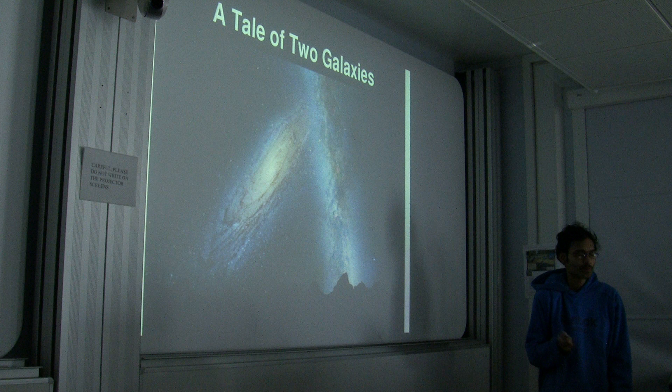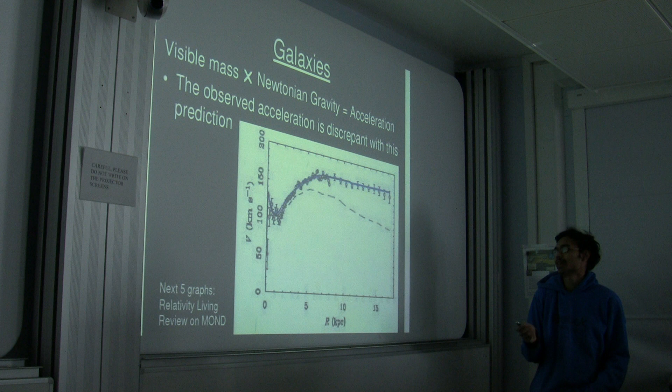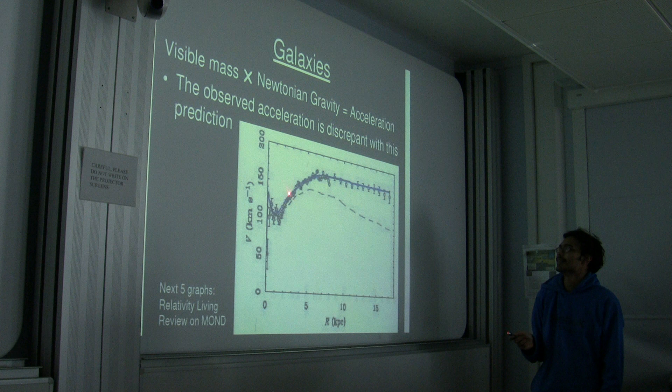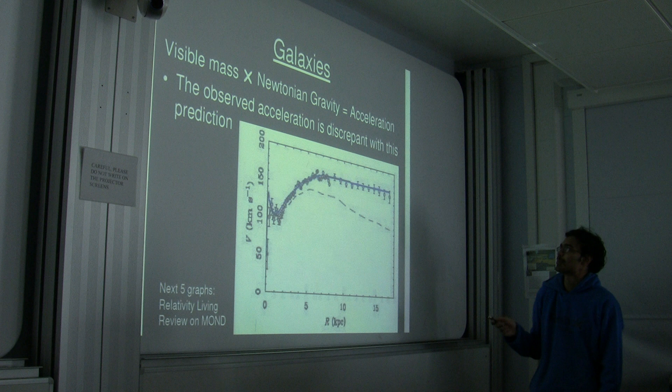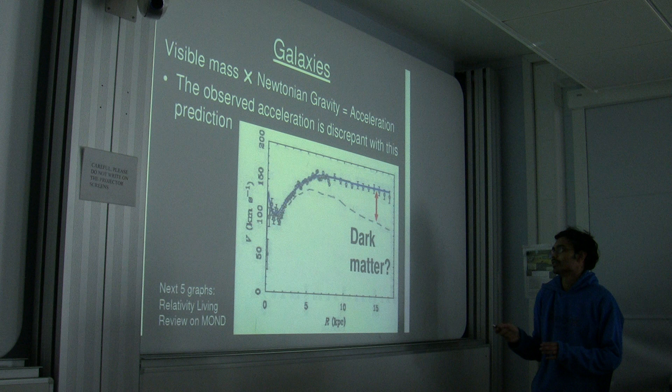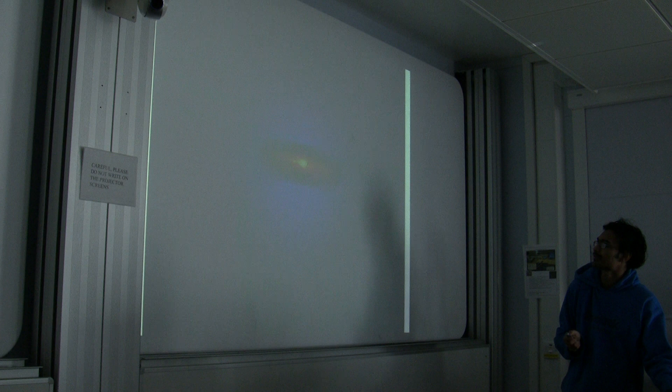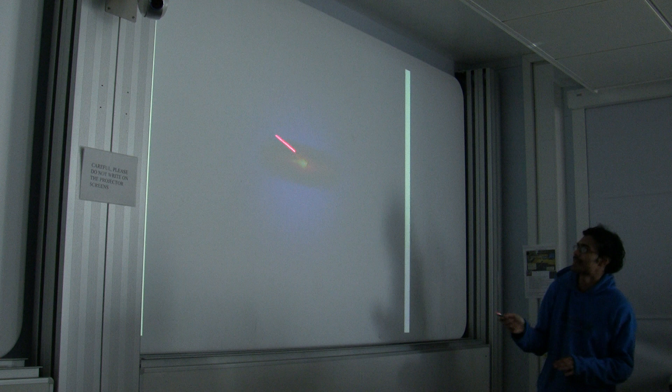When we look at galaxies, you can use Newtonian gravity and an estimate of the visible mass to try and predict how quickly it should rotate, and you get something looking like that. It should fall off, just like in the solar system. But the observed rotation speeds actually stay flat, so there's a big discrepancy, and that might be due to dark matter, which can raise the force. The picture I want you to have in mind is of this galaxy with a halo of dark matter around it.